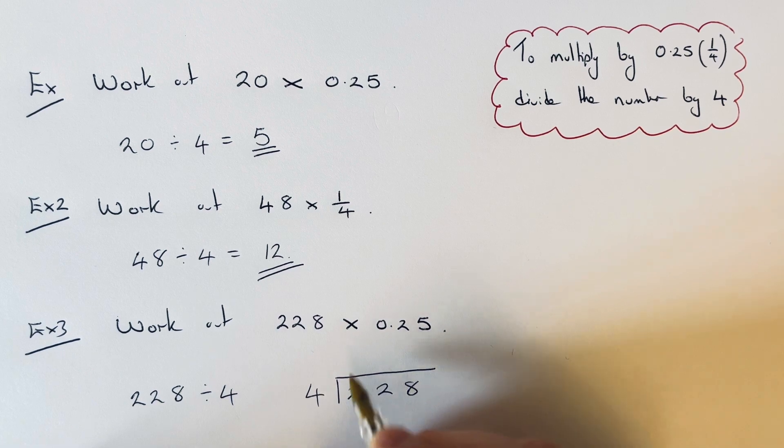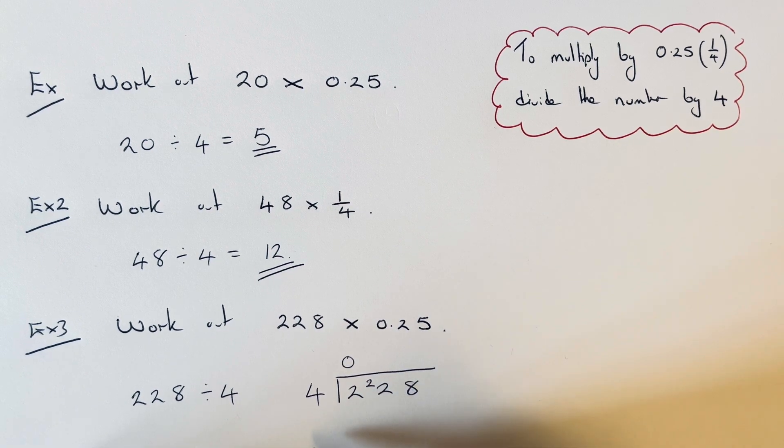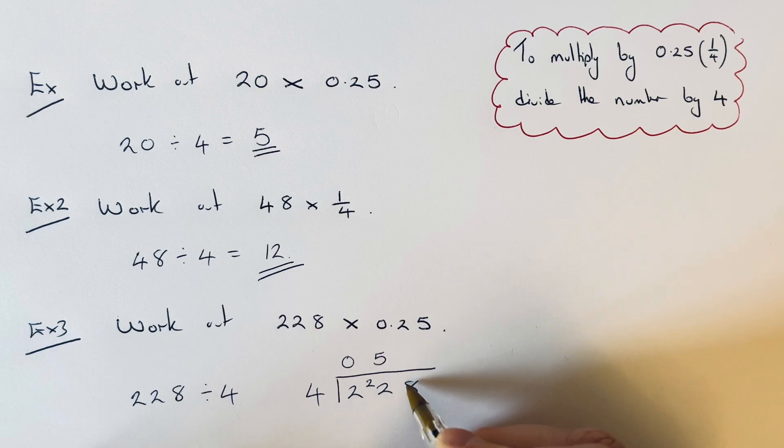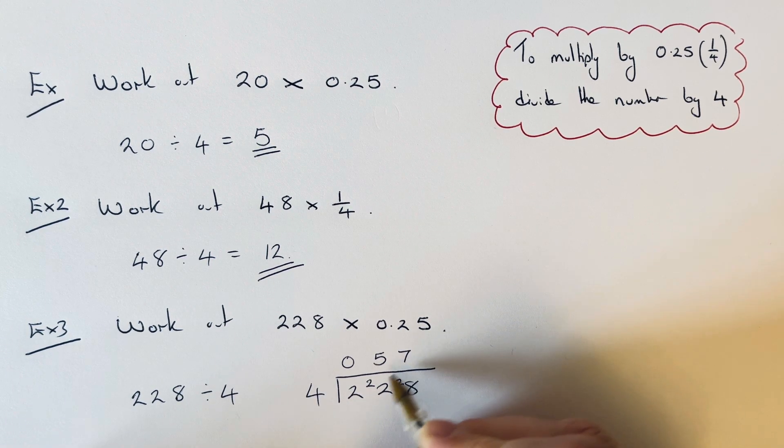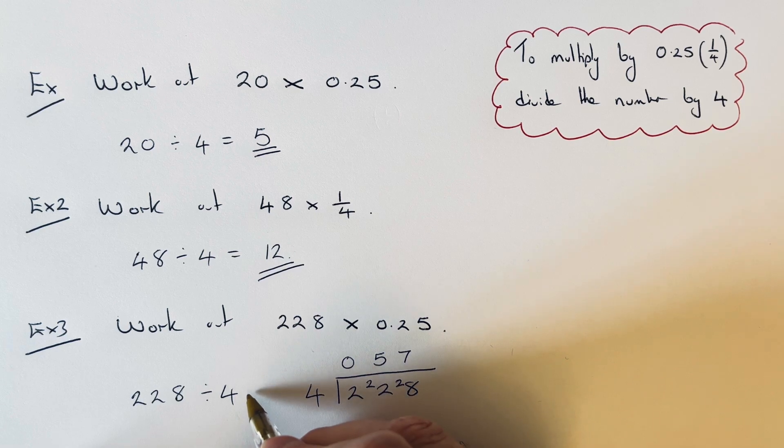So 2 divided by 4, 0 remainder 2. 22 divided by 4, 5 remainder 2. 28 divided by 4 is 7. So our answer is 57.